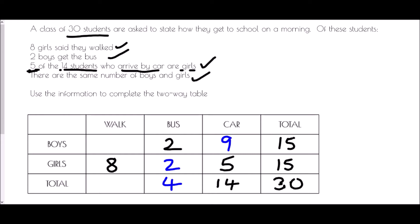For the other two boxes, we have a couple of options. We could look along the totals row: 14 plus four is 18, which means we have 12 remaining. Or we could look across the boys row: we know there are 15 boys, 2 plus 9 is 11, so there are 4 extra boys who walk. And 4 plus 8 is 12. It works in every direction — we've completed the two-way table.